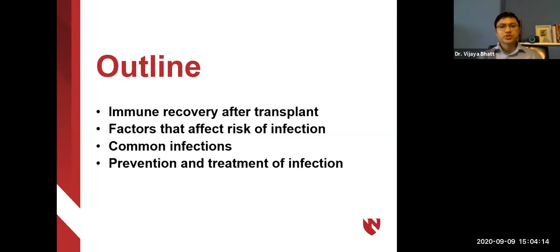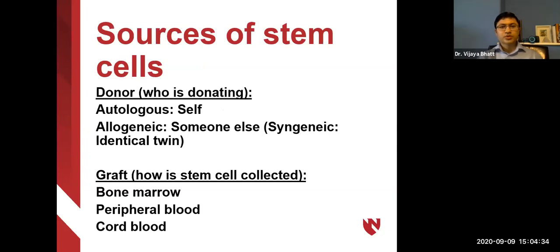This slide shows the outline of our talk. I'll discuss transplant briefly, immune recovery after transplant, and factors that affect risk of infection. Dr. Zimmer will discuss prevention and treatment of common infections. This next slide lists sources of stem cells. Depending on the donor, a stem cell transplant could be autologous or allogeneic, where the source of stem cells is a donor. If the donor is an identical twin, it is called a syngeneic transplant. Stem cells can be collected from bone marrow, peripheral blood, or cord.